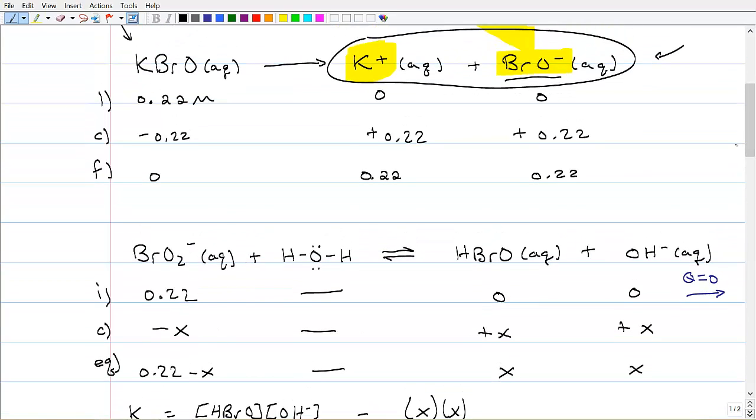So what happens is the BrO minus will react with the water to form HBrO and OH minus. And we're going to have an equilibrium here. We're going to start with 0.22. Where did I get that number? I got that number right here. This final number is my initial here.